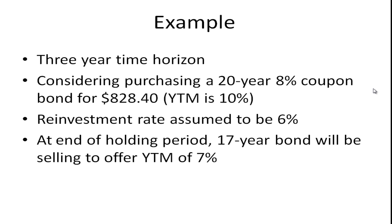We're going to assume that the reinvestment rate is 6%, and we're also going to assume at the end of the holding period, the 17-year holding period, the yield to maturity will be 7% for the bond when we sell it. We're going to need that to calculate the price of the bond.